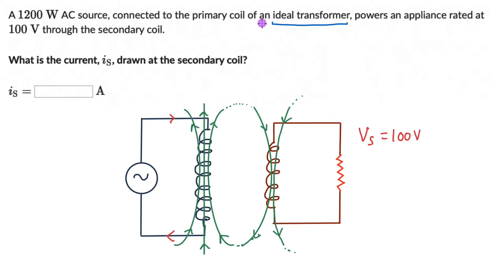When we mention an ideal transformer, it means all the flux generated in the primary coil links or passes through the secondary coil — there is no flux leakage and therefore no energy loss. You might wonder how that's possible when the secondary coil is at a distance. It turns out we can use a ferromagnetic core, which pulls all the magnetic field lines and makes them pass through the secondary coil, keeping the field strength the same.